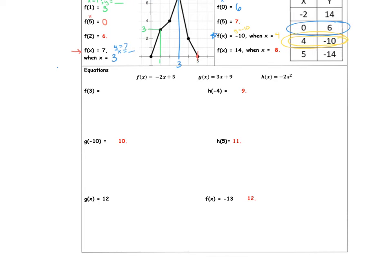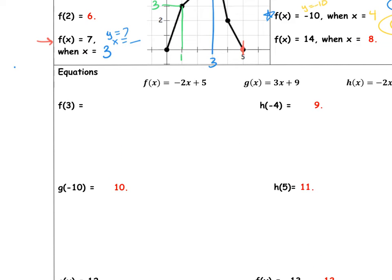When it says f of 3 equals blank, we're going to use this function here. So we're going to say f of 3 equals negative 2 times 3 plus 5. So f of 3 is negative 6 plus 5. So f of 3 is negative 1. You're going to leave it that way, so that it says f of 3 equals negative 1, because that's being very specific.